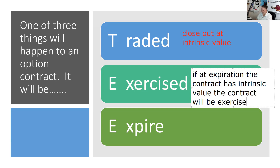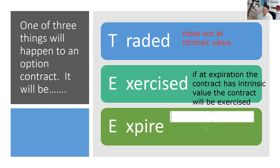Another reason intrinsic value is important is because if at expiration the contract has intrinsic value, the contract will be exercised. On the exam, I'm not under an obligation to tell you where that happened. You should be able to say it's an Apple 175 call, Apple is at 190 at expiration—it's going to get exercised. Every option question on the exam is going to end with either the option contract got traded, got exercised, or got expired worthless.